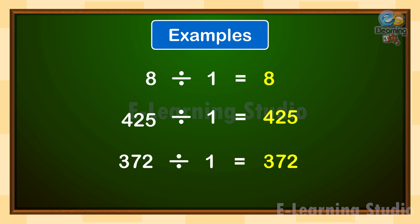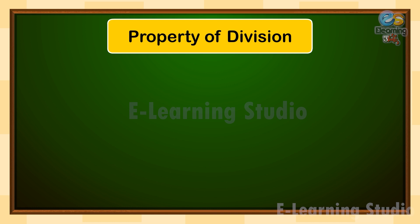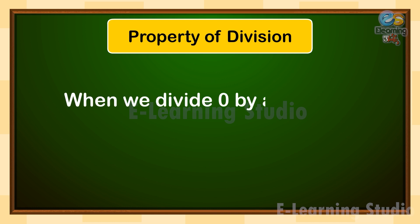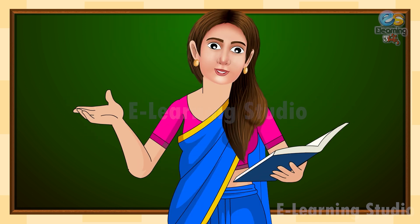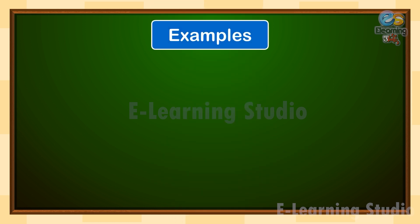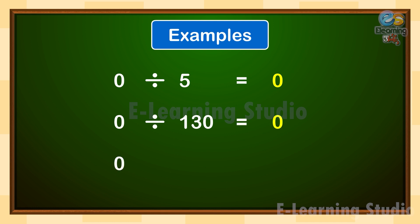In our next property, when we divide 0 by a number, except 0, the quotient is 0. Let us understand with the help of some examples. 0 divide by 5 is equal to 0. 0 divide by 130 is equal to 0. 0 divide by 470 is equal to 0.